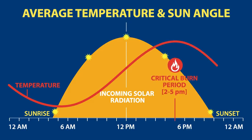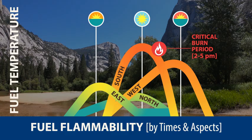The hottest part of the day is several hours after solar radiation is at its peak, and it's not uncommon for fire to be most active during this time. We call this afternoon peak in temperature and fire behavior the critical burn period, and it's a good idea to take five minutes before the critical burn period to assess the fire environment. When in complex terrain, aspect impacts fire behavior because of the difference in sun angle at different times of the day, which affects the fuel moisture.